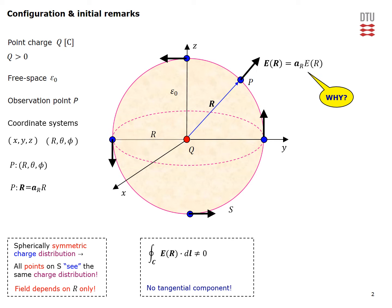The electric field is radial and constant at any point on this surface. This surface S is called the Gaussian surface in this problem, and we can use Gauss's Law to determine the electric field. Gauss's Law states that the flux of the electric field intensity through a closed surface S equals the total charge enclosed by the surface divided by the free space permittivity ε₀. If the normal component of the electric field is constant everywhere on S, we can take it outside and use Gauss's Law to determine the field.